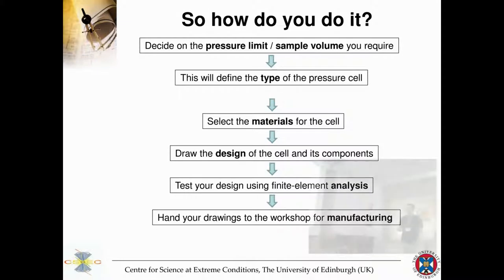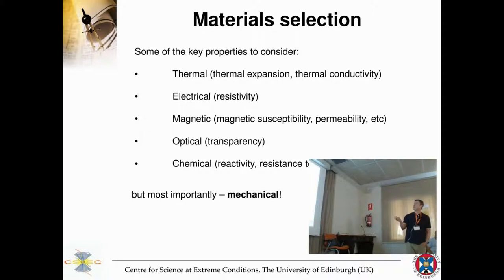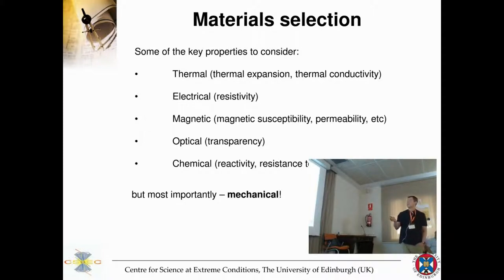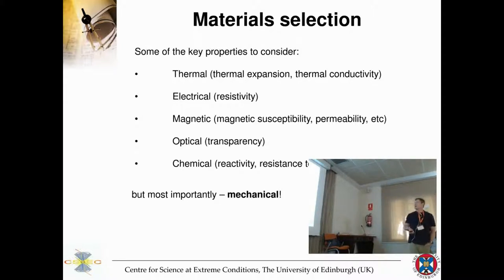For material selection, key properties to consider include thermal expansion, thermal conductivity, electrical resistivity, magnetic properties, optical transparency, and chemical reactivity with the sample and resistance to corrosion. All these things matter when choosing the material for either the gasket or the piston-cylinder cell.